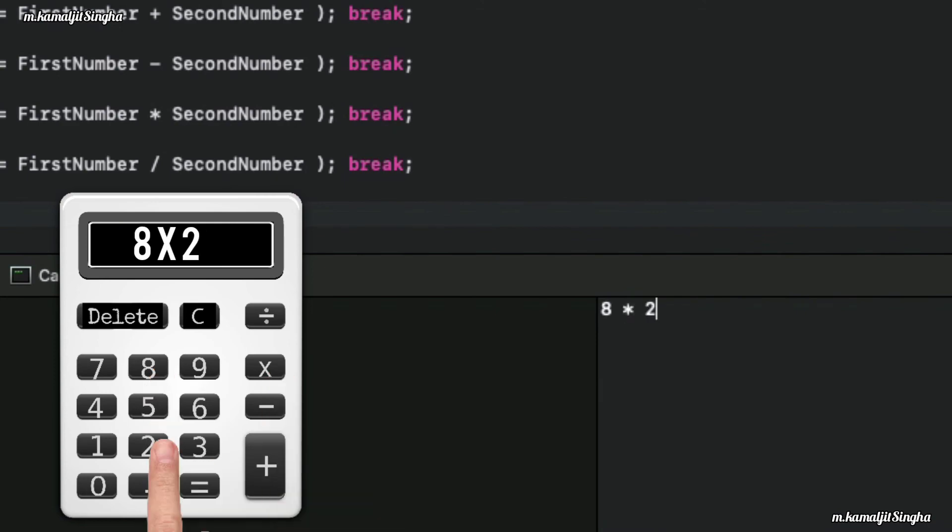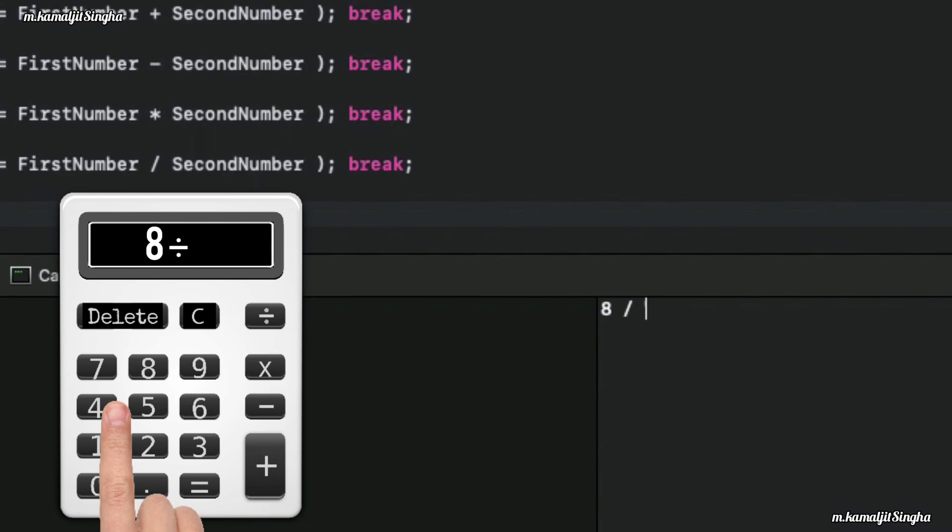8 multiply by 2 is 16. 8 plus 2 is 10. 8 divided by 4 is 2. 10.5 plus 0.5 is 11.